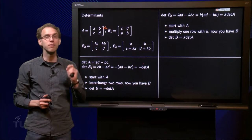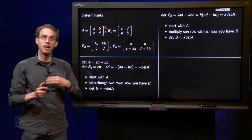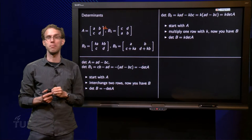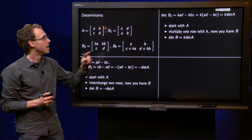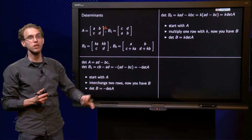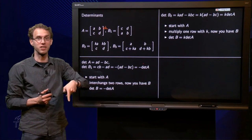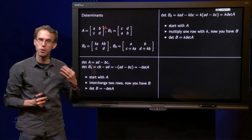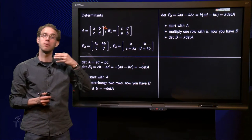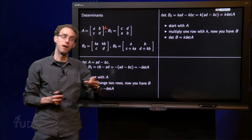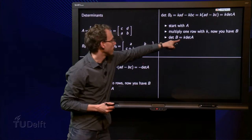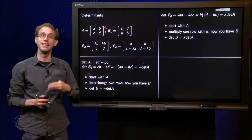Now here we need to be careful, because if you want to make mistakes with this kind of stuff, it's here where you can make the mistakes. You start with A, you multiply one row with K, then you get B, then you get the determinant of B by multiplying the determinant of A by K. So mind the order. Sometimes students accidentally put K on the other side, and then it's not true.